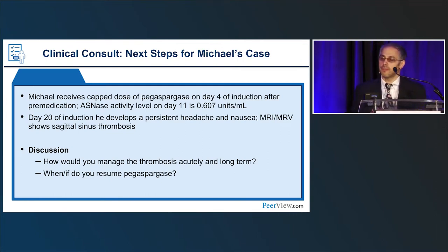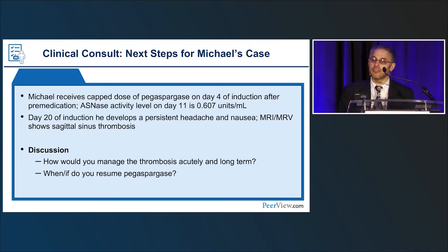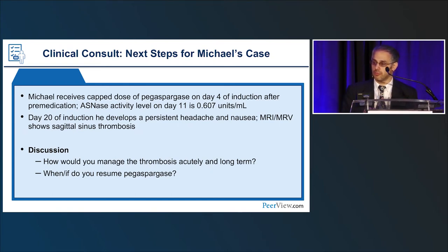Getting back to Michael: he received a cap dose of PEG asparaginase on day four of induction. One week later, an asparaginase activity level was obtained at 0.607 — most patients checked about a week after asparaginase are somewhere in the 0.6 to 1 range, which is super therapeutic. On day 20 of induction, the patient developed persistent headache and nausea, and MRI showed a sagittal sinus thrombosis. This raises questions about managing the thrombosis acutely and long-term, and what to do about future PEG asparaginase doses.